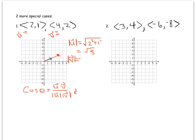The magnitude of v — dealing with the bottom part of the formula — is the square root of 4 squared plus 2 squared, which equals the square root of 20. Then I also need the dot product, which is 2 times 4 plus 1 times 2, and that equals 8 plus 2, which is 10.